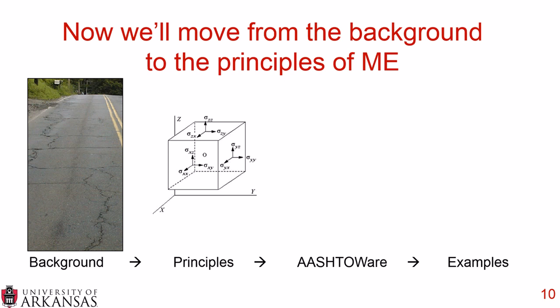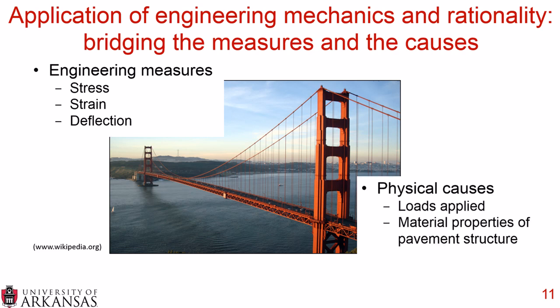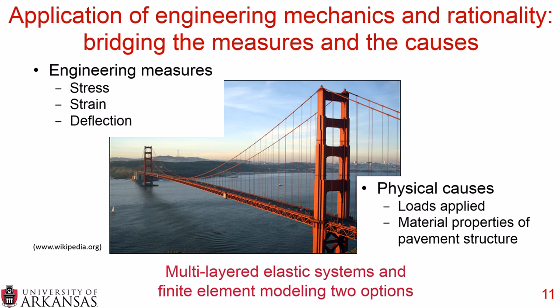That's the background of mechanistic empirical design and the need for it. Now we're going to go into the principles of ME design. Mechanistic is the application of engineering mechanics and rationality — this is bridging the measures and the causes. The measures relate to the mechanistic portion, while the causes and results are more the empirical side. When we think about engineering measures, we talk about stresses, strains, and deflection in the pavement layer, and we bridge those to the physical causes: the loads applied and the material properties. There are two approaches: a multi-layered elastic system or a finite element modeling option.